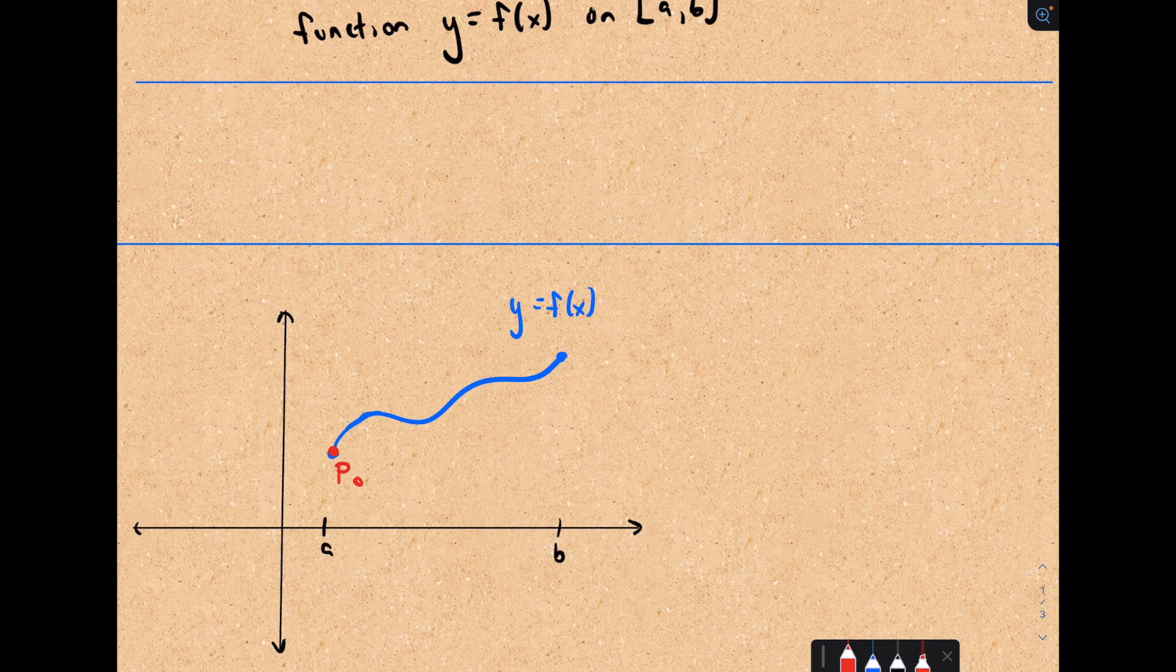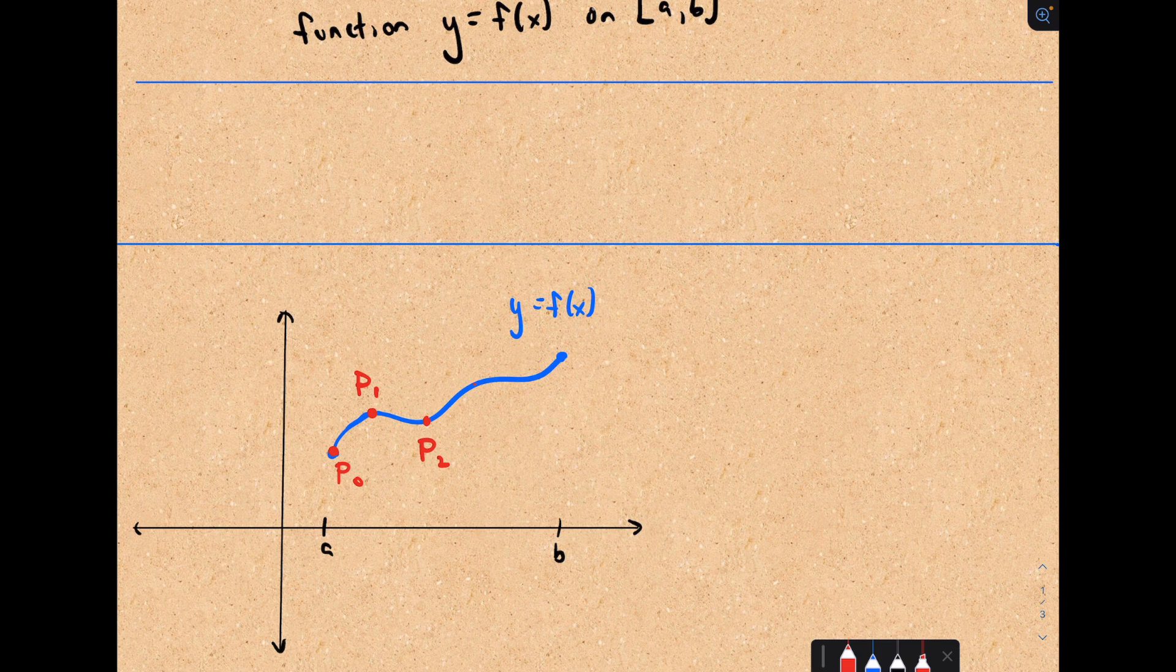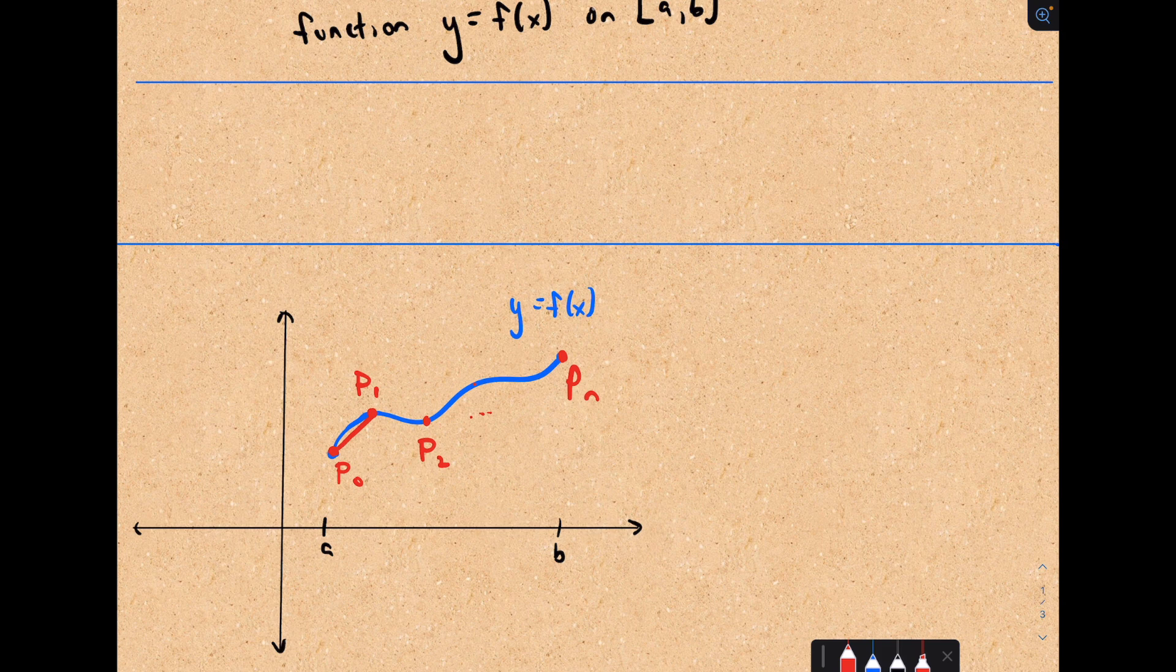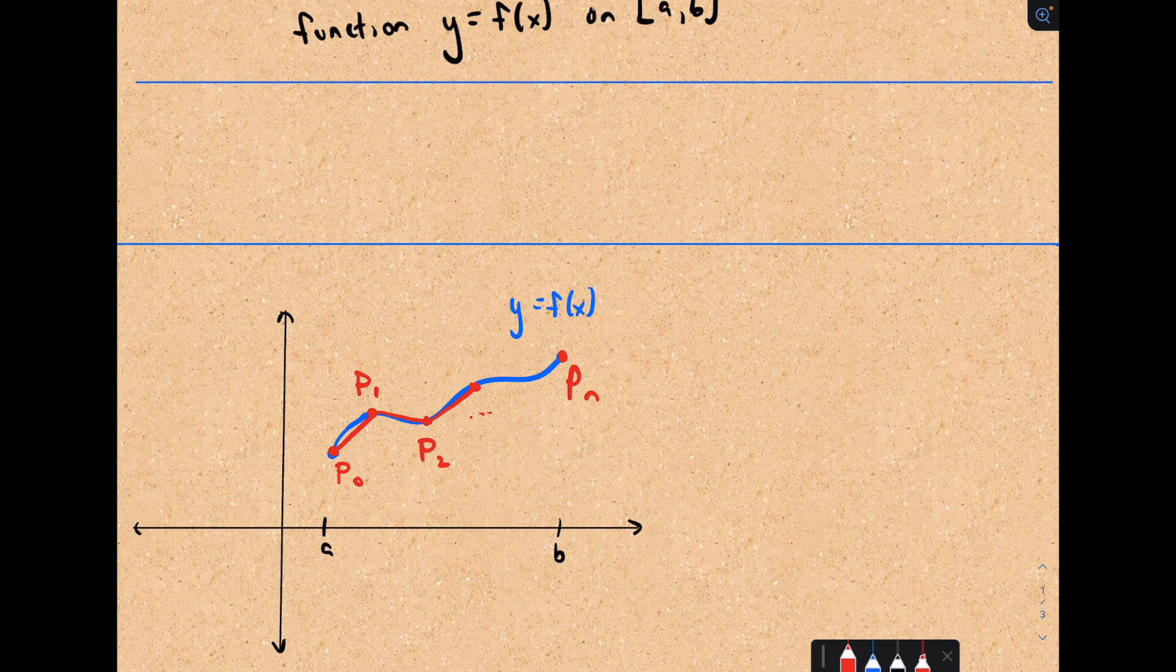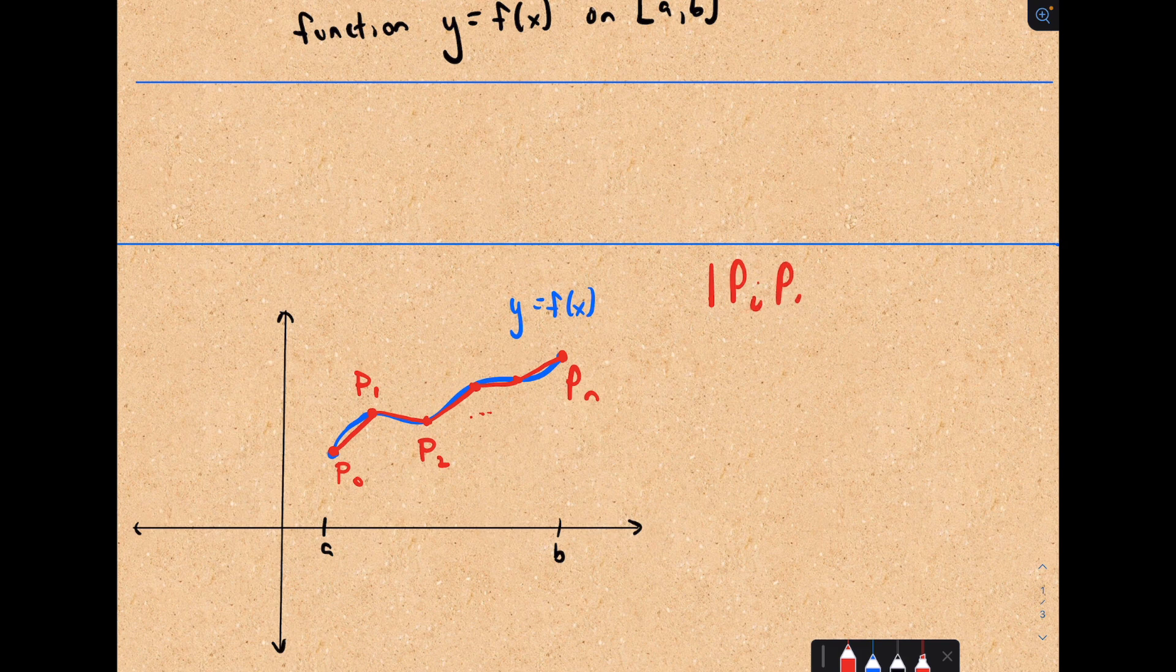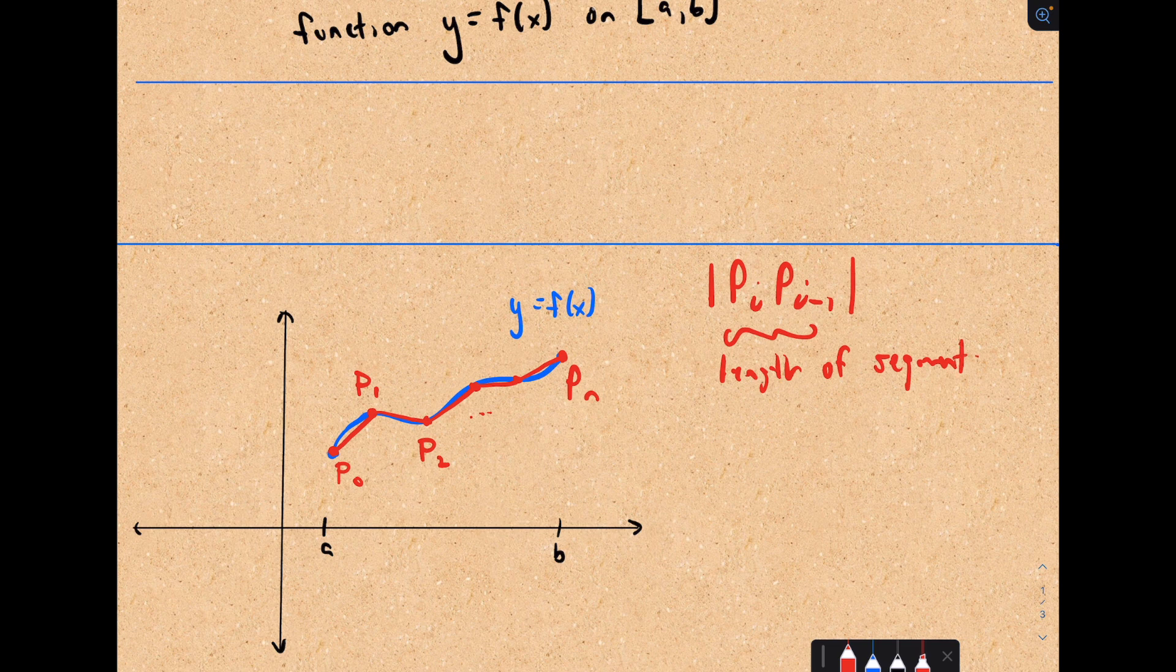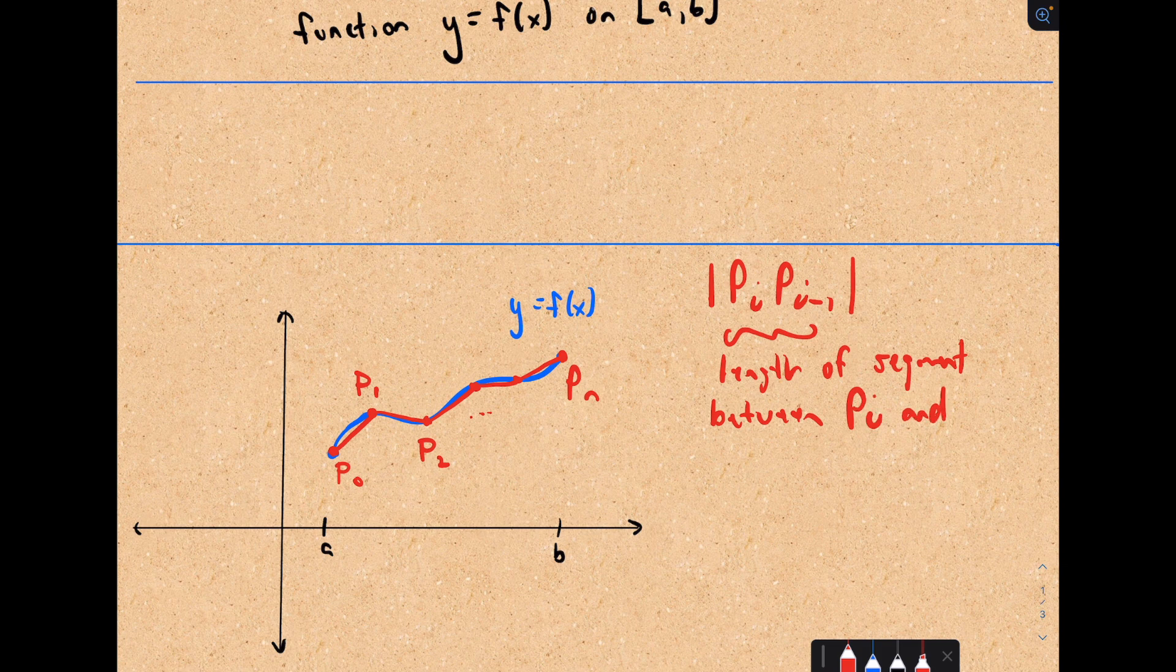So suppose I chop up my arc into little pieces. The way I'm going to do that is I'm going to take some points, p sub 0, p sub 1, p sub 2, etc., up to p sub n. What I'm going to do is connect those dots by straight line segments. I could compute the lengths of these straight line segments easily using the distance formula. Suppose that p sub i to p sub i minus 1 is the length of the segment between p sub i and p sub i minus 1.